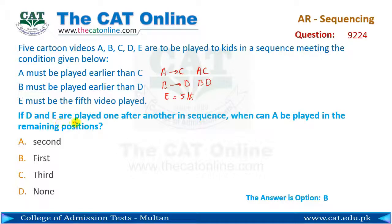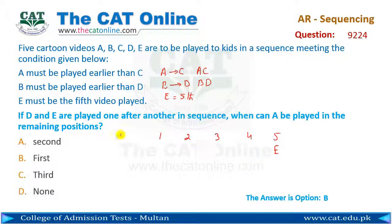The question is: if D and E are played one after another in a sequence — yani ke yeh five hain toh five tak yeh line hai — E fifth par aani thi aur D us se pehle aayegi. Toh D yahan aayegi, toh us rule ke mutabiq B us se pehle bhi aayega, aur phir A aur C aayenge.